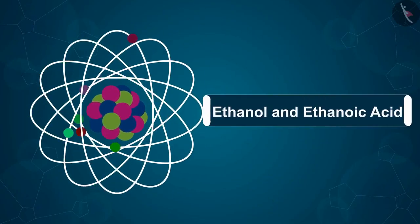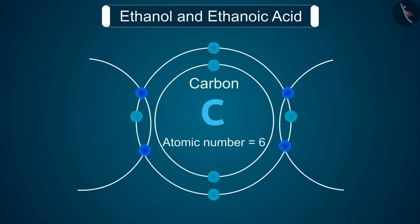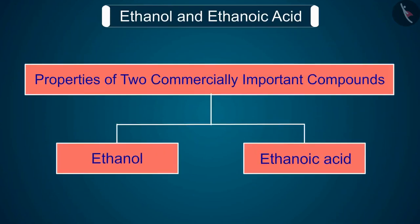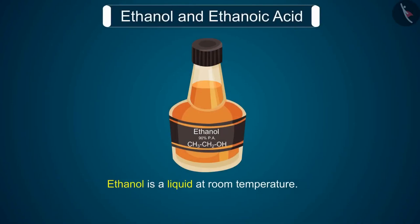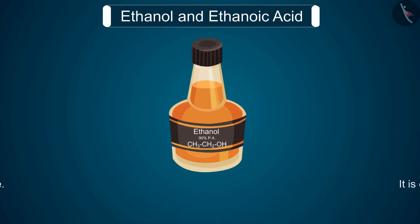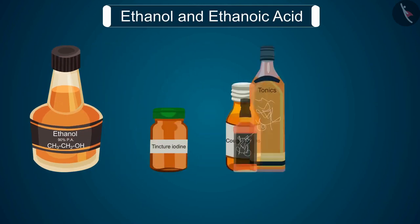Welcome to this video session. The topic is ethanol and ethanoic acid. Many carbon compounds are invaluable to us. Here we shall study the properties of two commercially important compounds: ethanol and ethanoic acid. Ethanol is a liquid at room temperature, commonly called alcohol, and is the active ingredient of all alcoholic drinks. Because it is a good solvent, it is also used in medicines such as tincture iodine, cough syrups, and many tonics.